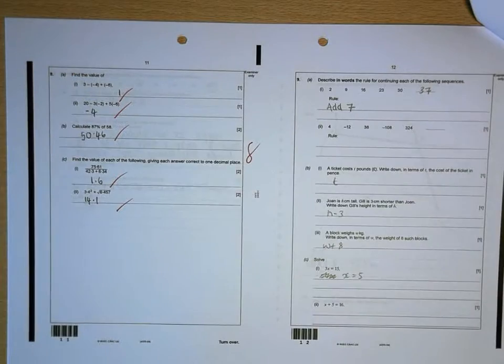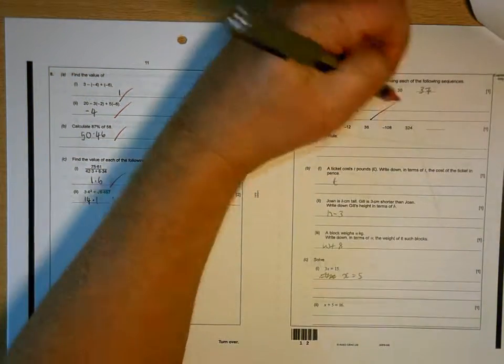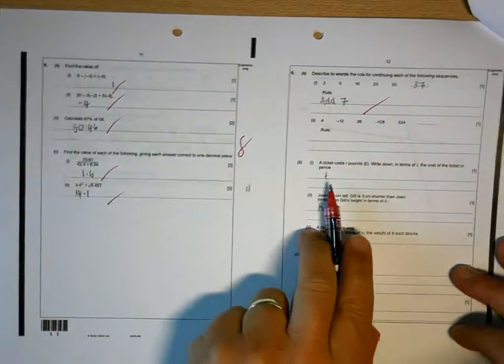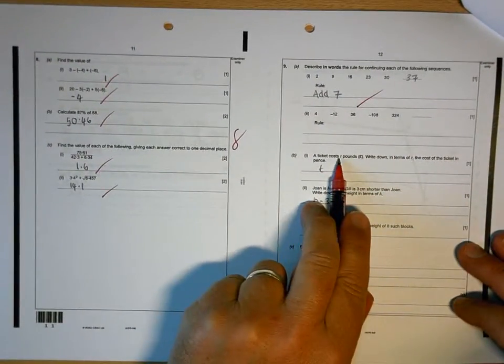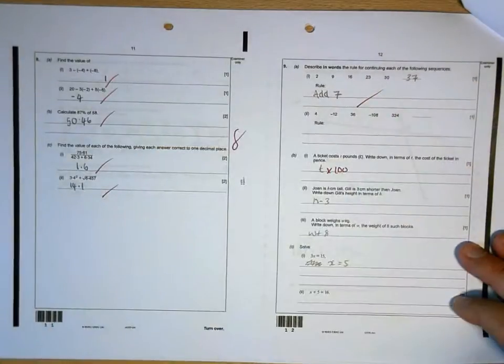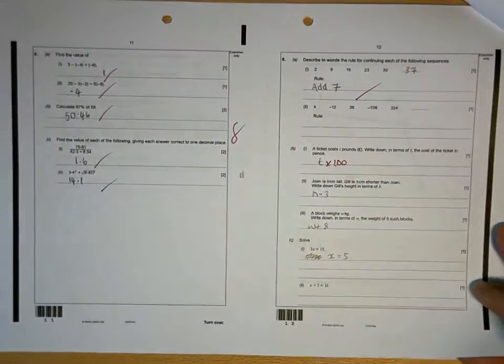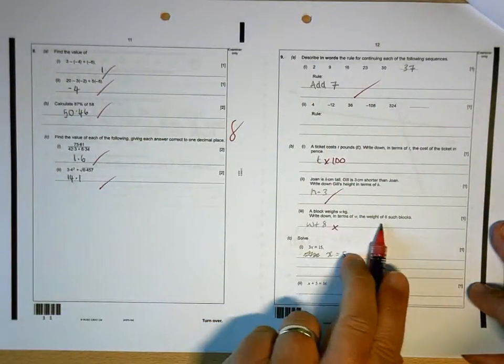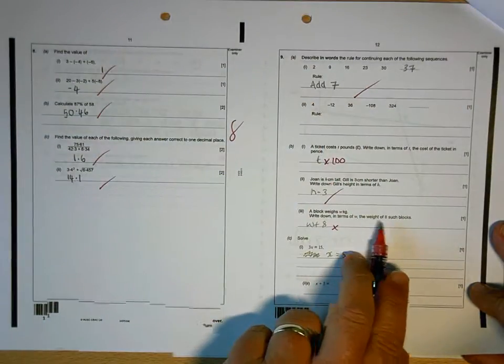Good. And 7 is correct. I'll come back to that one. Here, if it's T pounds, you would multiply it by 100 to turn it into pence. 5 pounds would be 500 pence, and so on. That one's right. That one's not. It's not 8 heavier. It's 8 longer.